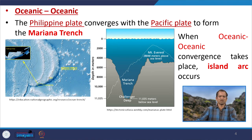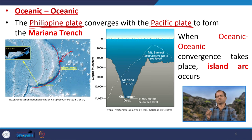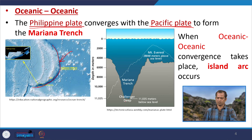The best global example of oceanic-oceanic convergence is the Philippine plate converging under the Pacific plate. The Pacific plate is going down under the Philippine plate, and the result is the deepest trench in the world — the Mariana Trench. There is a comparative study showing that even Mount Everest would be fully submerged under the Mariana Trench.